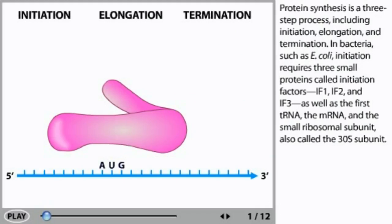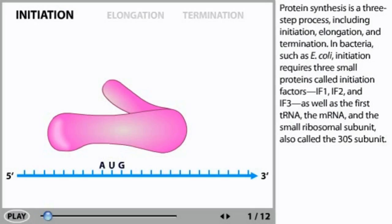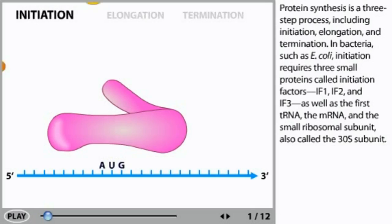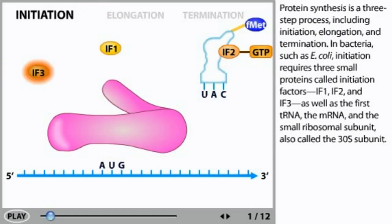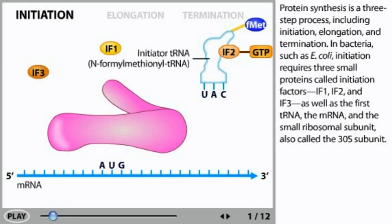In bacteria such as E. coli, initiation requires three small proteins called initiation factors — IF1, IF2, and IF3 — as well as the first tRNA, the mRNA, and the small ribosomal subunit, also called the 30S subunit.